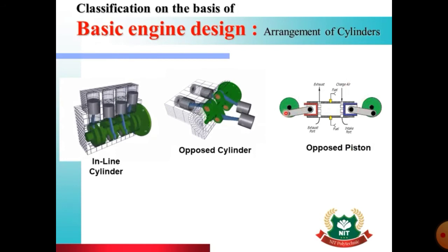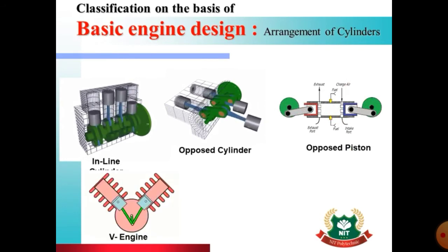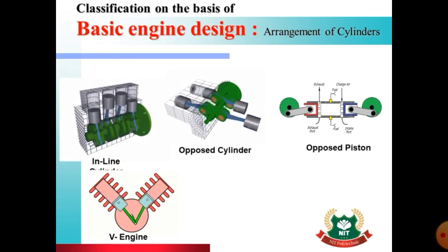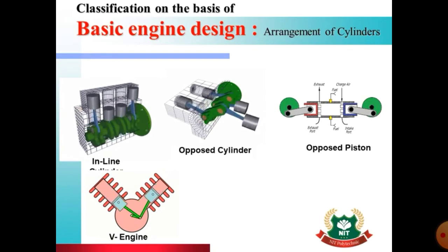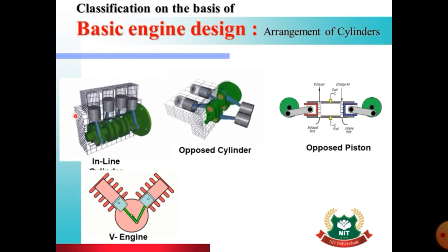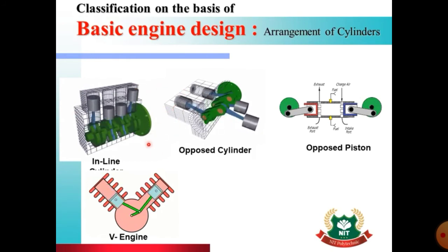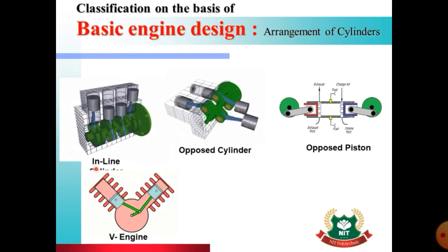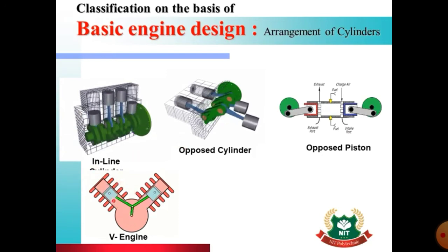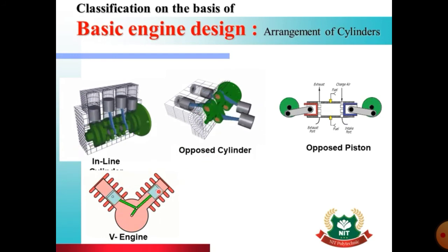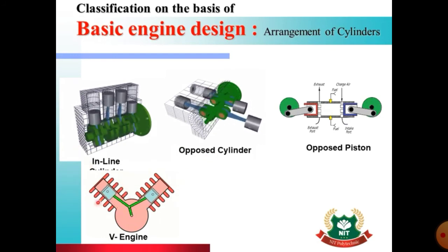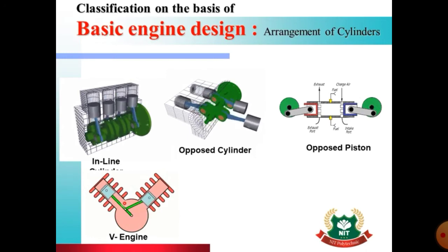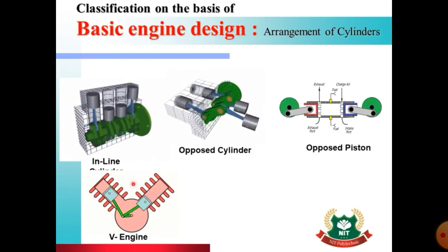In the opposed piston system, a single fuel charge is inserted and the engine works with two crankshafts. When more power is needed, more cylinders are required — if six, eight, or twelve cylinders are used, the engine length increases and it may not be possible to install it in a vehicle. So the cylinders are arranged in a V-shape, connected to a single crankshaft, making the engine more compact.